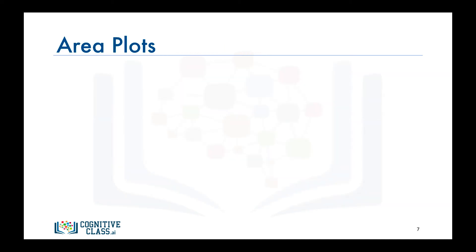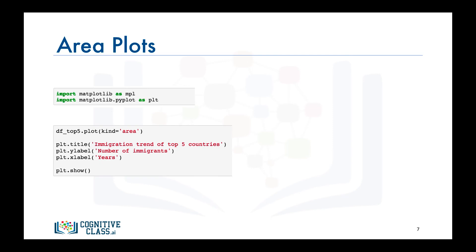To do that, first we import matplotlib as MPL and its scripting interface as PLT. Then we call the plot function on the data frame DF_top5 and we set kind equals area to generate an area plot. Then to complete the figure, we give it a title and we label its axes. Finally, we call the show function to display the figure.